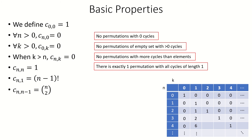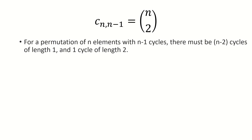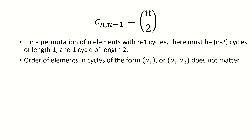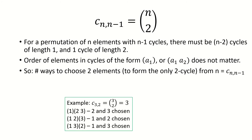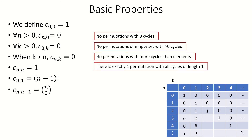As our next property, c sub n n minus 1 equals n choose 2. This is because for a permutation of n elements with n minus 1 cycles, we must use n minus 2 cycles of length 1 and 1 cycle of length 2. Because all cycles are of length 1 or 2, the order of elements within them doesn't matter, so this becomes a problem of choosing two elements to form our 2-cycle, which is just n choose 2. We can now fill in the next diagonal of our table.